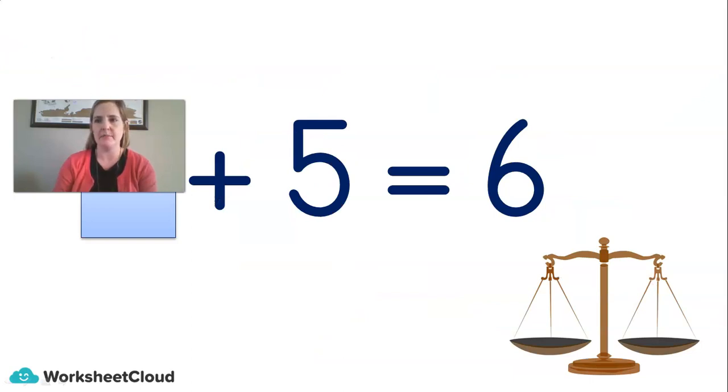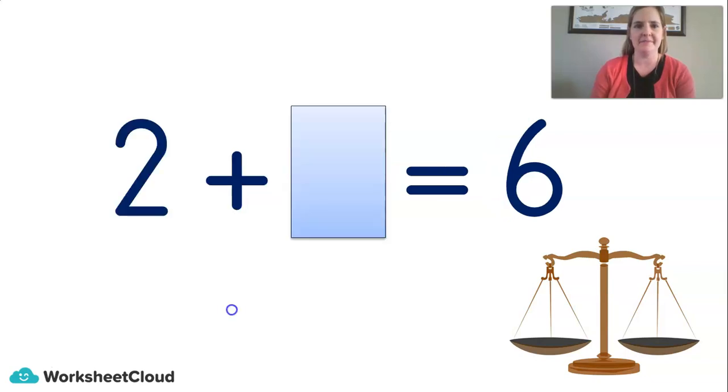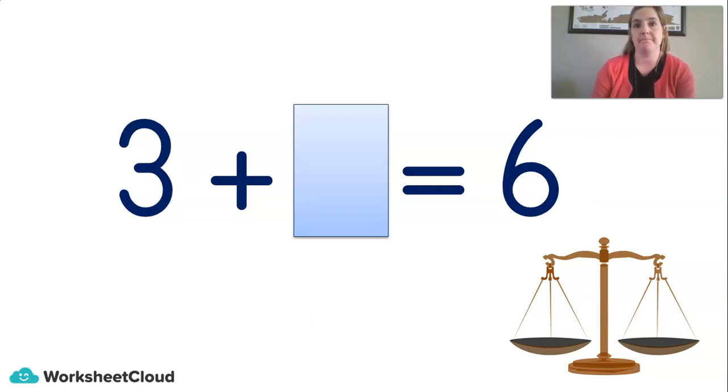Now, we're going to try some of these without all my funny drawings. And I want you to think in your head whichever way is easiest for you. What plus five equals six? One. Did you get that right? Which method did you use? The hotel way of thinking or the scale way of thinking? Let's try another. Two plus equals six. Four. That's right. Two plus four equals six. Three plus equals six. Three plus three equals six. Very good.